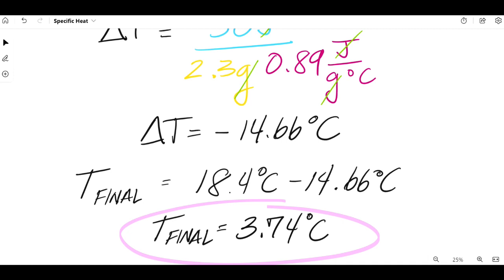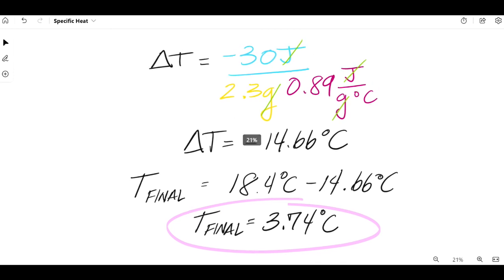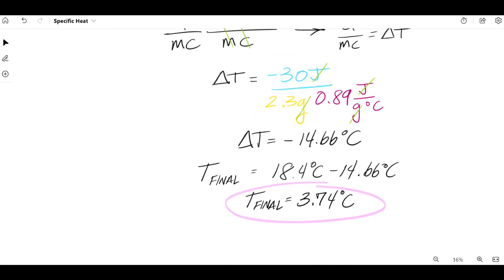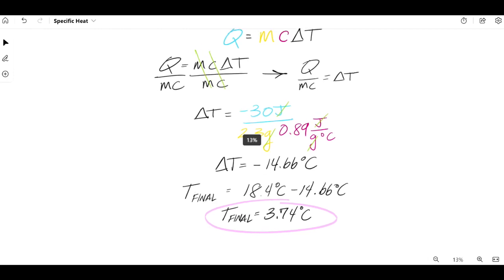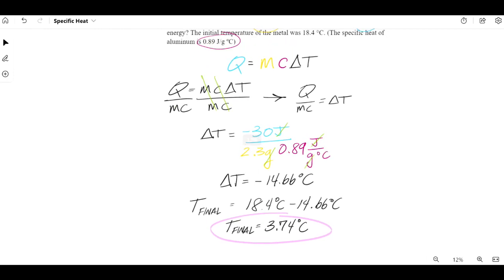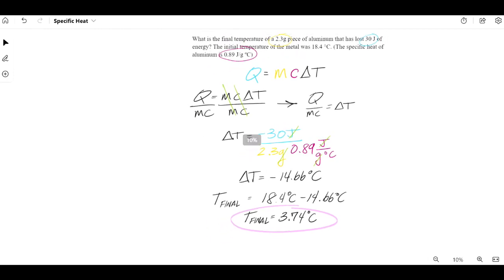Now, that's all well and good. We put it in our calculator. We set up the equation correctly. But does it make sense in terms of the question and what actually happened here? I think it does. We said that this piece of aluminum lost 30 joules of energy. So, its temperature should drop. So, it going from 18.4 degrees Celsius to 3.74 degrees Celsius makes total sense.